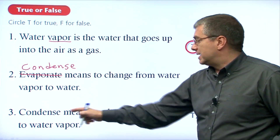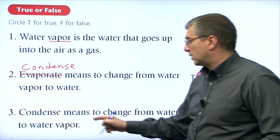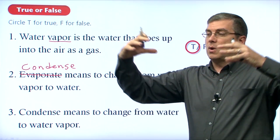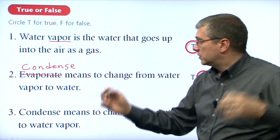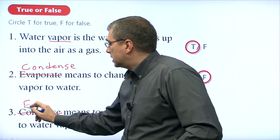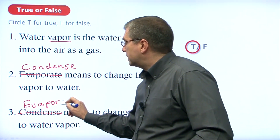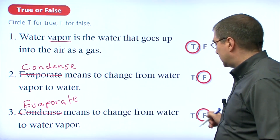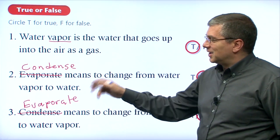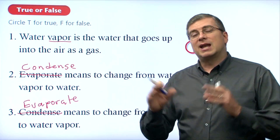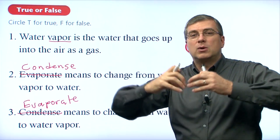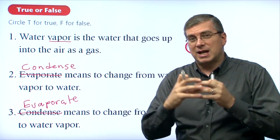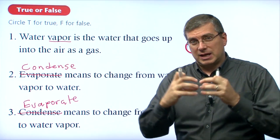Number three: condense means to change from water to water vapor. They've switched it around to try to confuse you — if water is changing to water vapor, that is evaporating, not condensing. So this sentence is also false. Remember: evaporate and condense are opposites. Evaporate means to spread out from a liquid to a gas. Condense means from a gas changing into a liquid — it's coming together. Evaporate: spreading out. Condense: coming together.